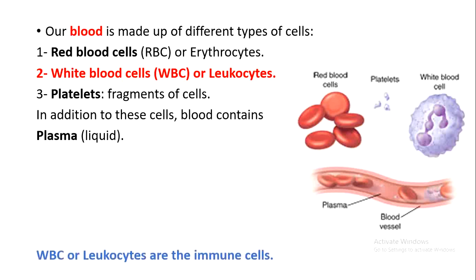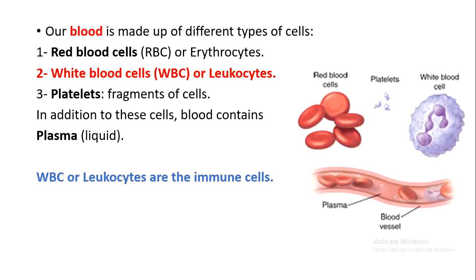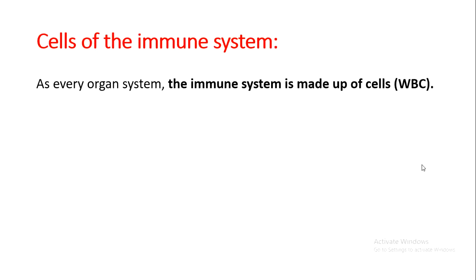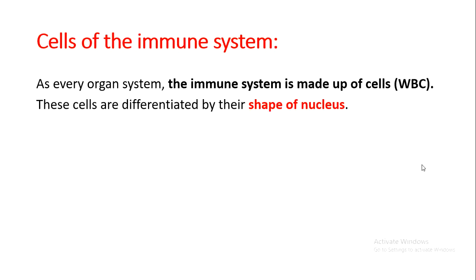The cells that make up the immune system are the leukocytes, or white blood cells. So the immune cells are white blood cells. These cells are not one type — they are different types, and we have to know these types. The immune system cells are differentiated by the shape of their nucleus.